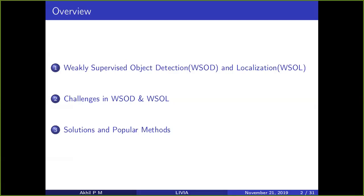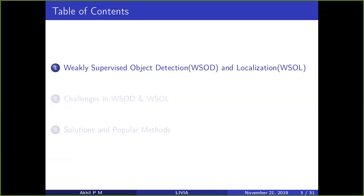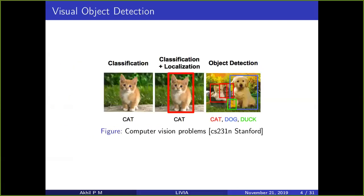To see the hierarchy of problems: we have classification, where you are given an input image and you need to know just the class. For localization, you need to locate it. For detection, you have multiple instances, and for each instance you will be adding bounding boxes — for example, there are multiple cats, so you have to localize each of them with a bounding box. This is the challenge of detection and localization.